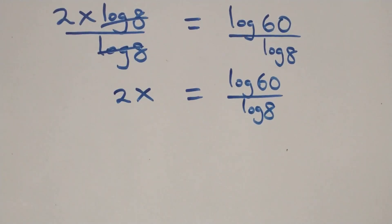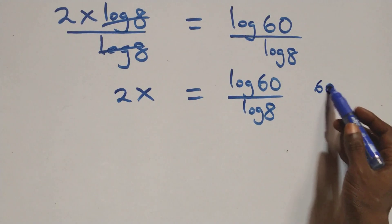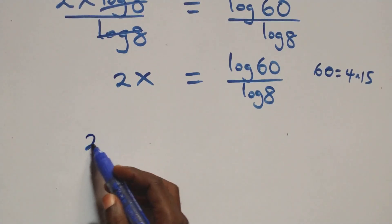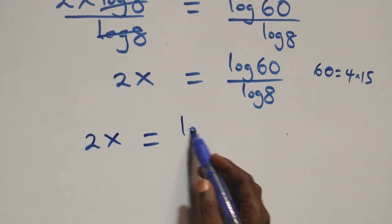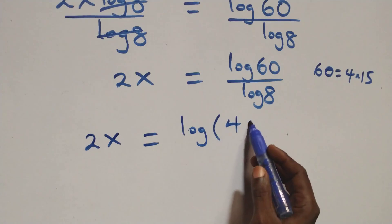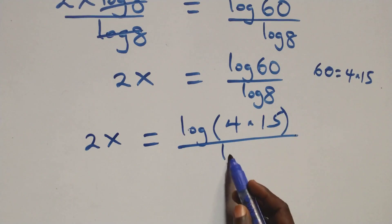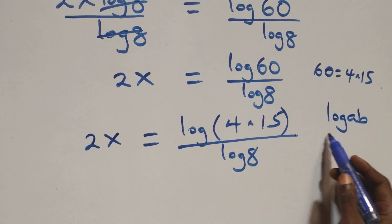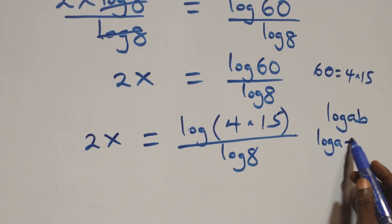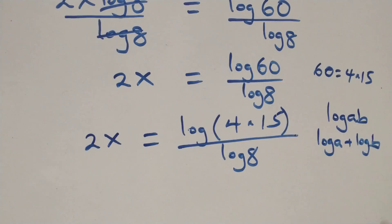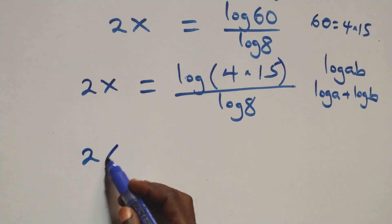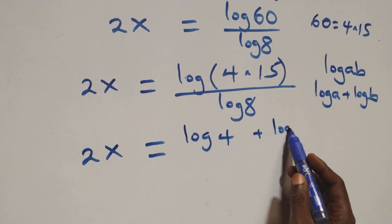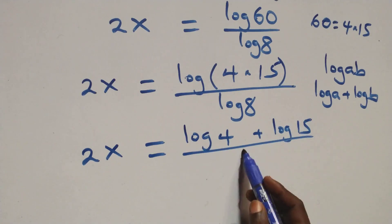The next step here, we can express 60 as 4 times 15. Then what we have here becomes 2x equals to log(4 times 15) over log 8. Then here, this follows the product law of logarithm: when we have log(a times b), this is the same thing as log a plus log b. At this, this becomes 2x equals to log 4 plus log 15 over log 8.